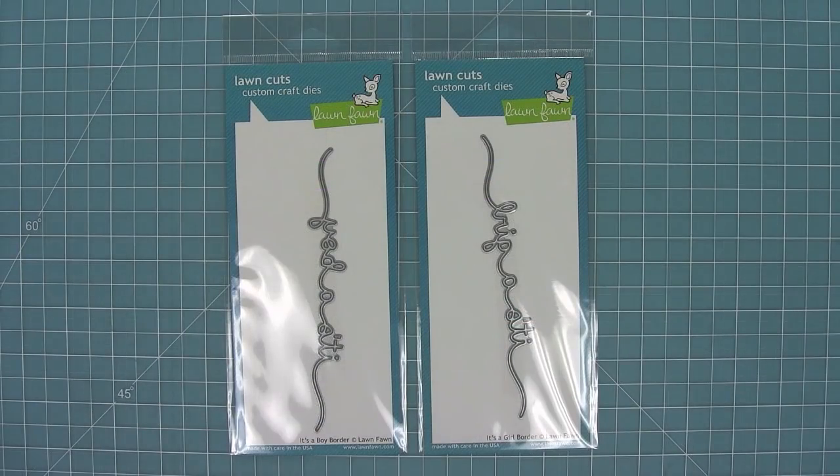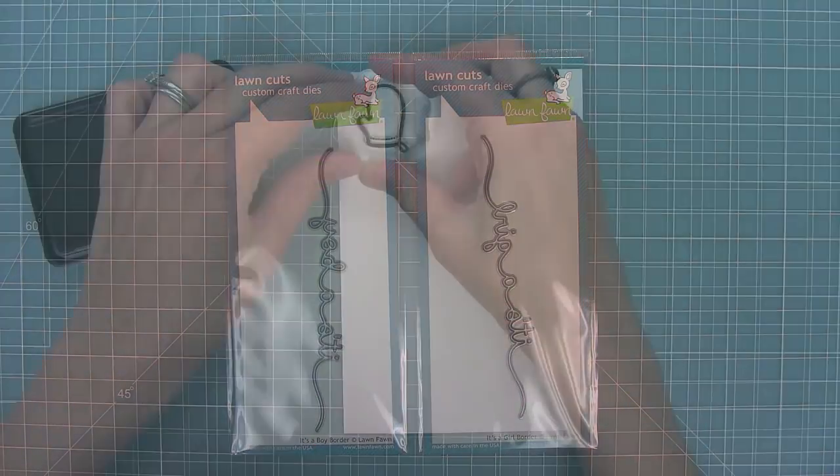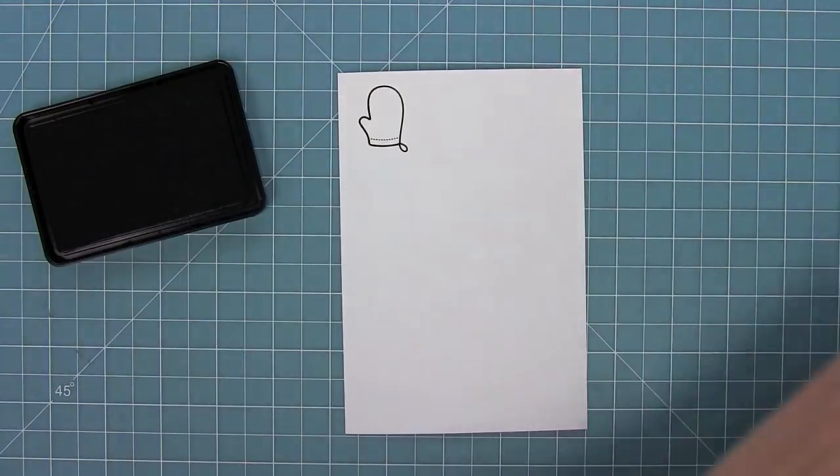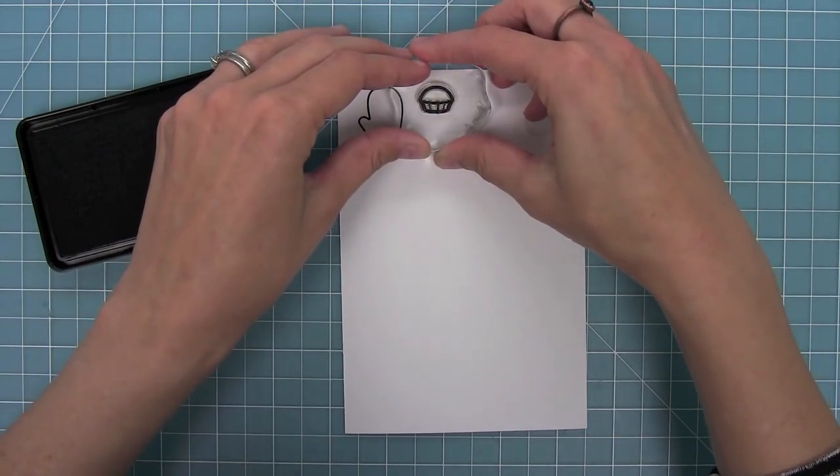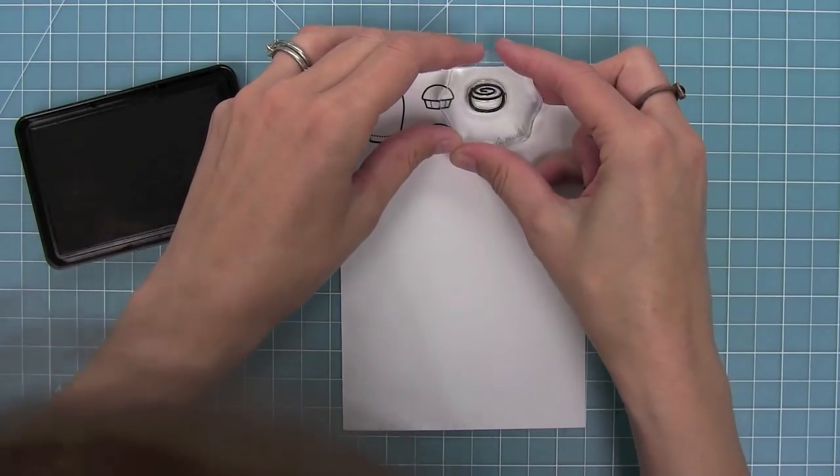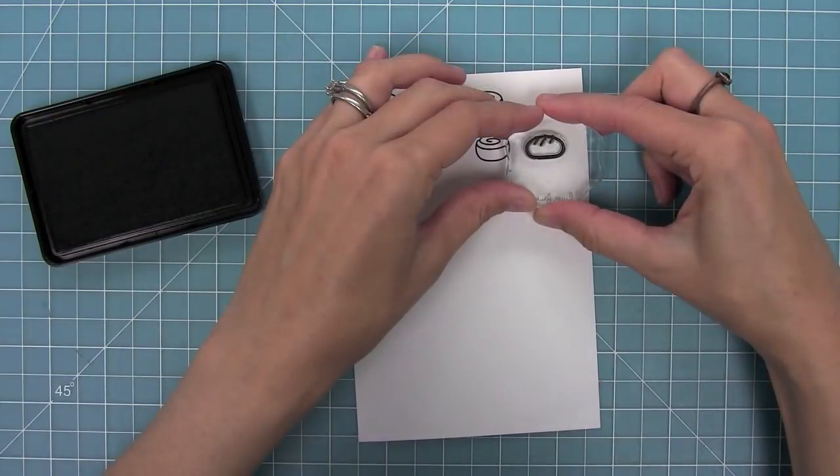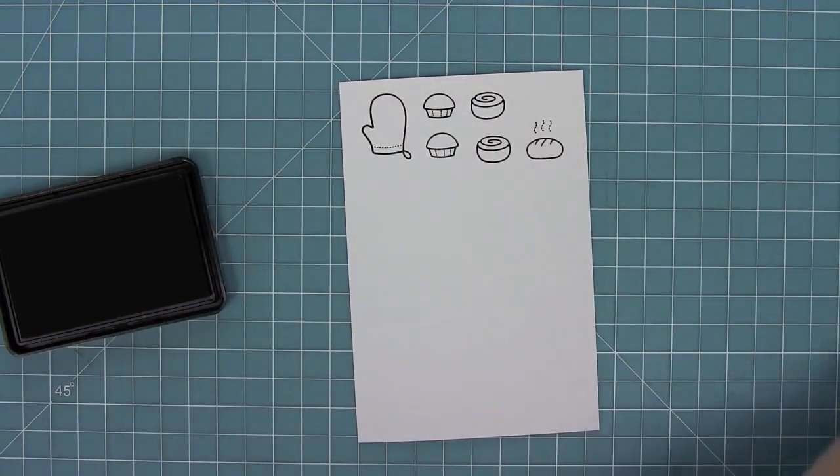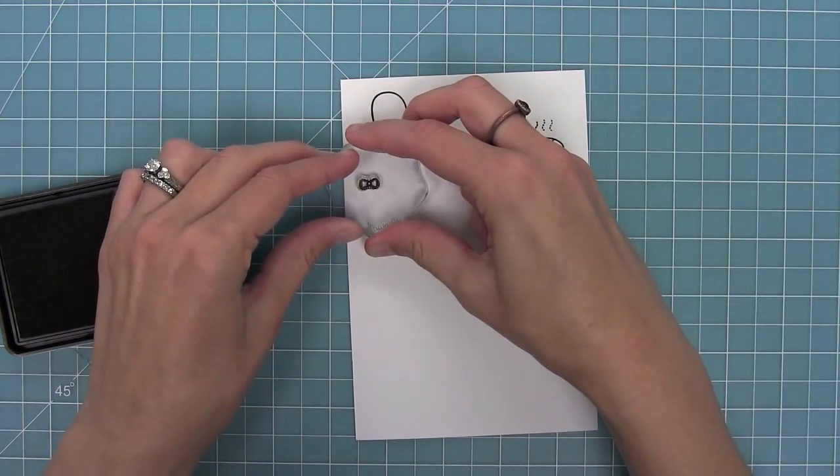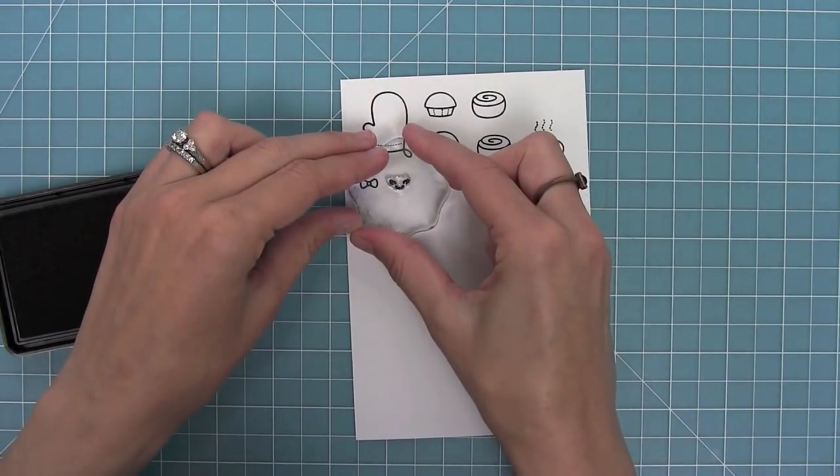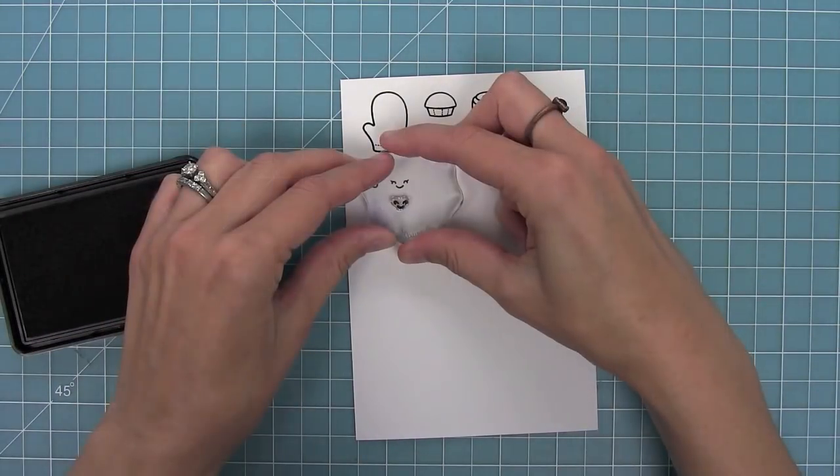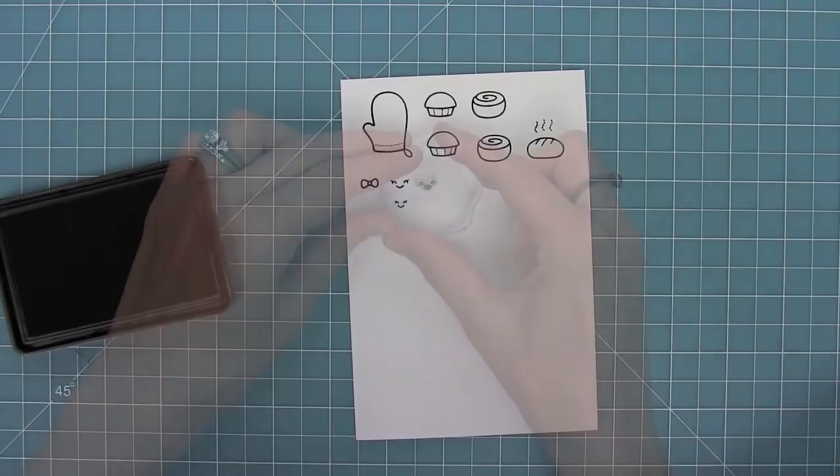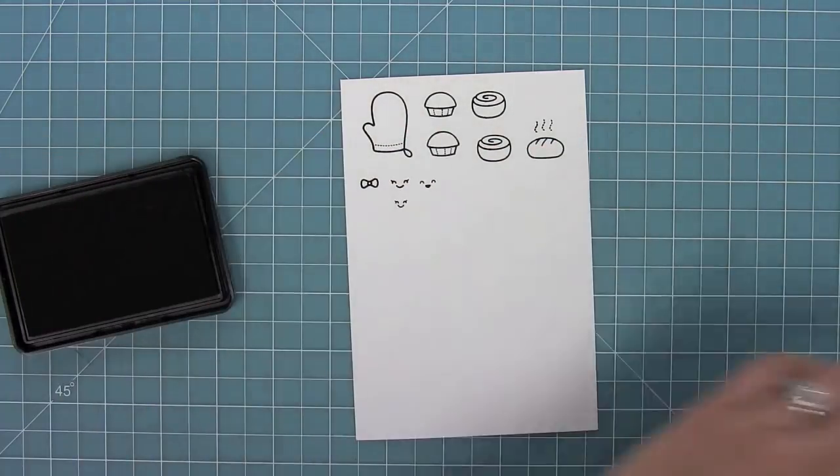We're also introducing some new dies that say it's a boy and it's a girl. First up we have this little oven mitt, a little muffin or cupcake, a cinnamon roll kind of bun, and a more bread-like bun. We also have some little steam lines for that bun, a little bow which you can add to any of the images, and smiley faces that you can add to the images in both a larger and smaller size.